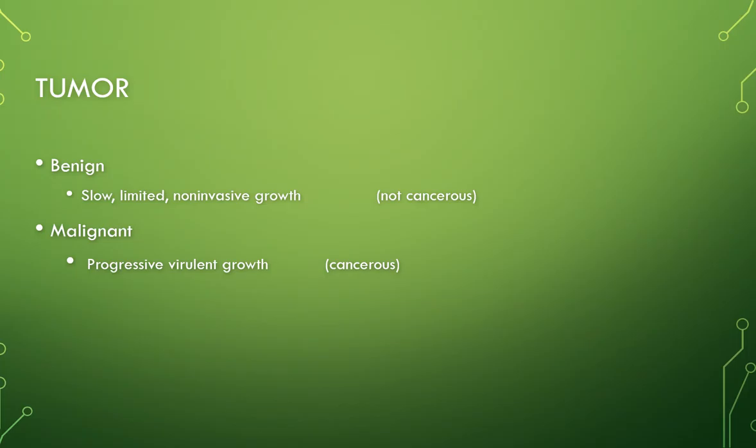Tumors can be of two types. One is benign, which has a slow, limited, non-invasive growth — it's not cancerous, it's self-limited, it doesn't spread. Then there's malignant, which is progressive, virulent growth. This is what's considered cancerous, and these types of cells can metastasize and infect other parts of the body from where they start.